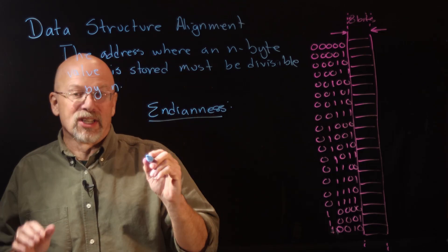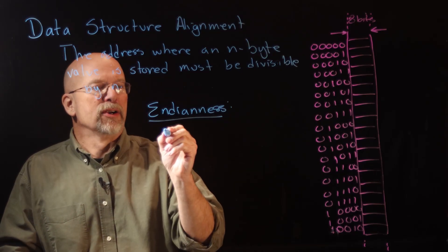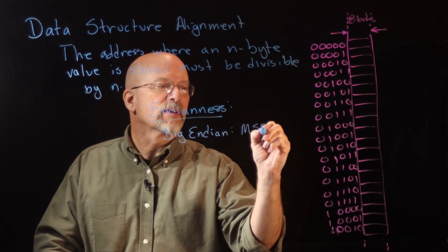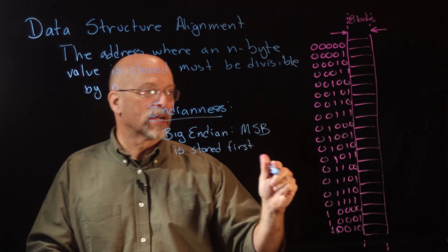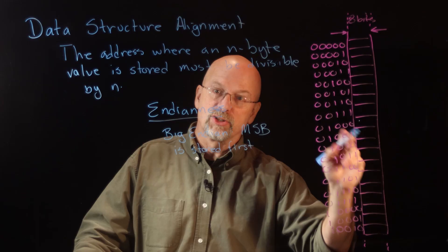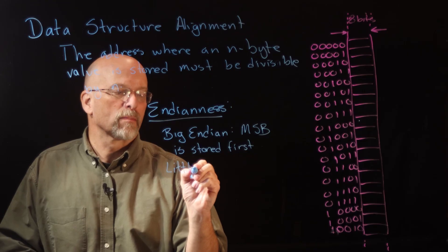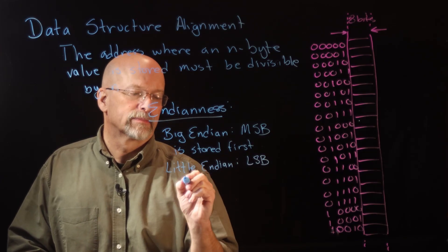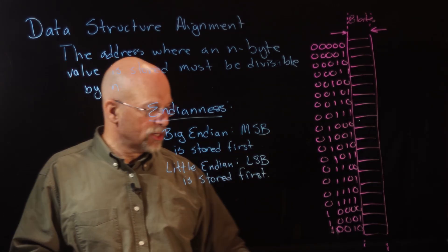Think of the bytes as being big or small. There's big-endian, which means the most significant byte is stored first — in the lower addresses — and then values decrease toward the least significant byte. Little-endian is the opposite: the least significant byte is stored first. Let's do an example to make sure we understand this.